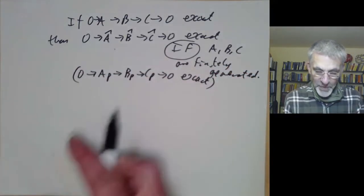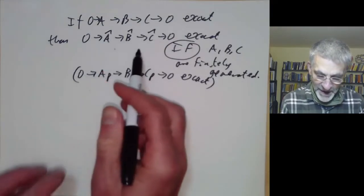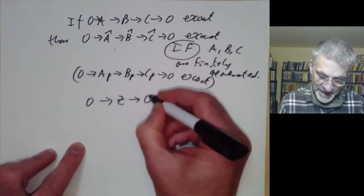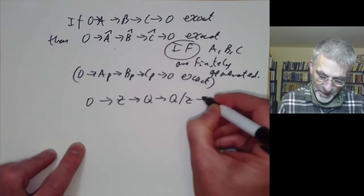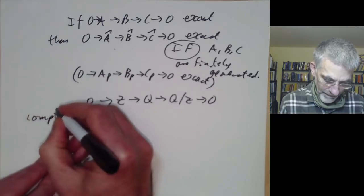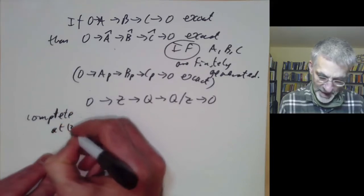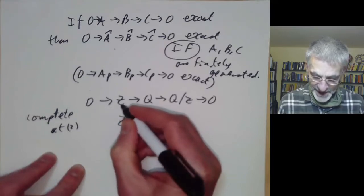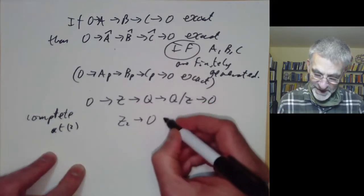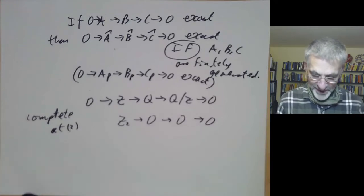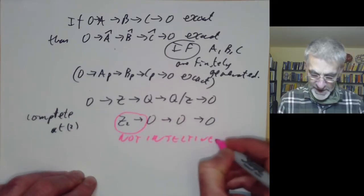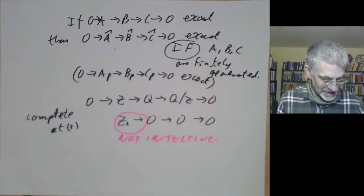Before giving the proof, this does actually fail if A, B, and C are not finitely generated. For example, take the sequence of modules over the integers where one term is the rational numbers Q. If we complete at the prime 2, then Z completes to the 2-adic integers, Q completes to zero, and Q/Z completes to zero. So the map is not injective, and completion doesn't always preserve exactness.